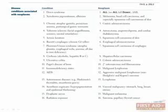First, there is a table that describes common conditions associated with specific neoplasms. Some of these, like Down syndrome, are genetic, whereas others, like ulcerative colitis, are chronic inflammatory conditions. The general concept here is that genetic changes, chronic inflammation, and immunosuppression can all lead to malignancy in the long run.